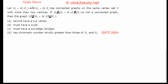Let G1 = (V, E1) and G2 = (V, E2) be connected graphs on the same vertex set V with more than two vertices. So G1 has vertex set V and edge set E1, and G2 has the same vertex set V but a different edge set E2.